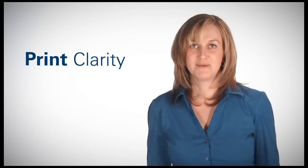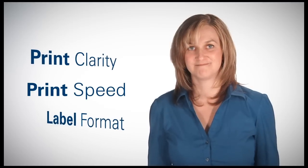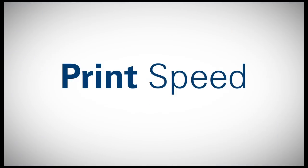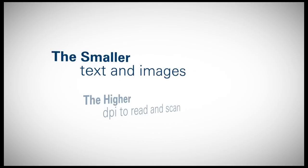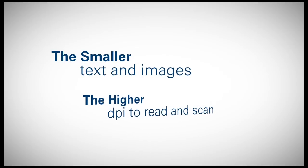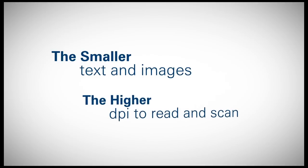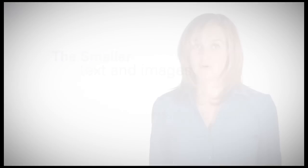Print clarity, print speed, and label format are interrelated. The higher the print speed, the lower the dpi. As a general rule of thumb, the smaller the text and images, the higher the dpi needed to read the text and images and scan the barcode. For more information, visit us at Zebra.com.